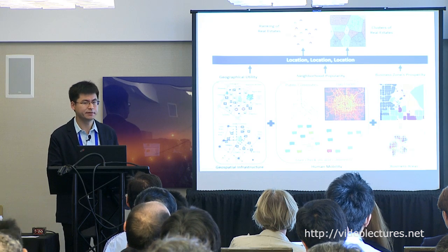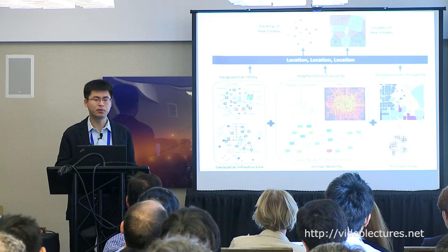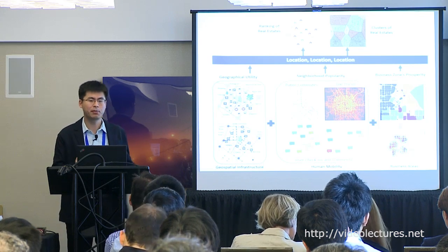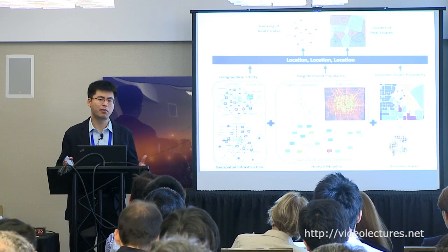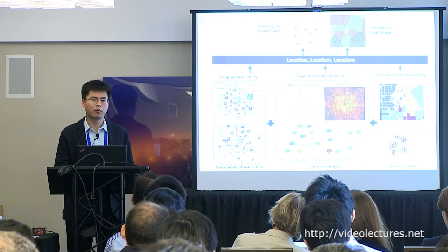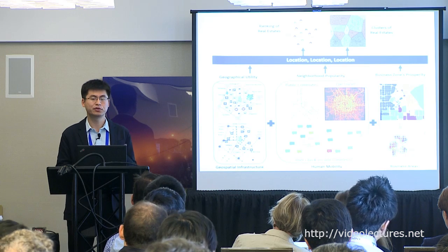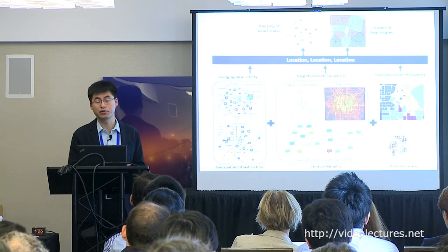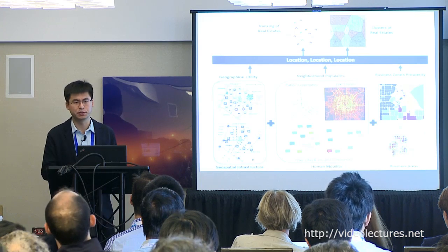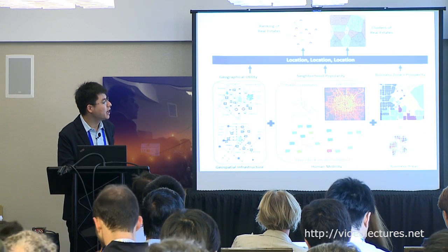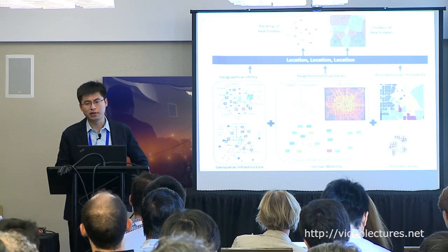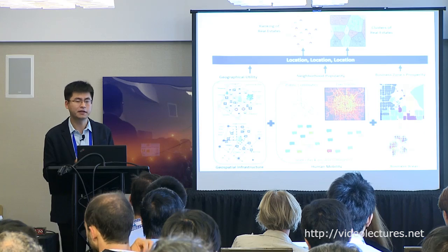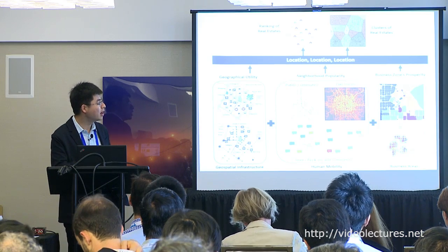We also look at social media data — the sentiment of people about the points of interest around this area. For example, a very high-quality primary school may increase real estate value tremendously compared to a normal primary school. The third category of data is the prosperity of the community where the real estate is located.